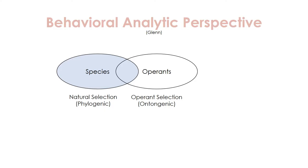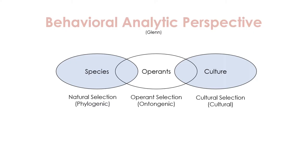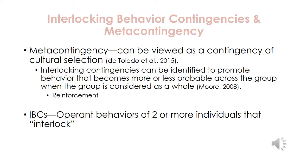If we look at culture from a behavior analytic perspective, this is a modified graph from Glenn's PowerPoint showing the first two levels of analysis — the phylogenic and the ontogenic. Culture makes up the third level, or the cultural selection level. When analyzing cultural contingencies, we look at interlocking behavior contingencies and metacontingencies. A metacontingency involves interlocking behavioral contingencies — the operant behaviors of two or more people — and these can be identified to promote behavior that becomes more or less probable across the group. When two operant behaviors interlock, the consequence is reinforcing to the group as a whole.